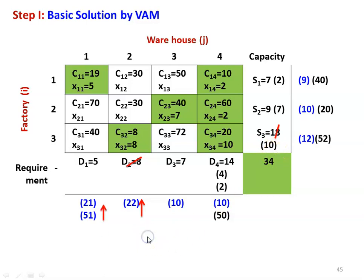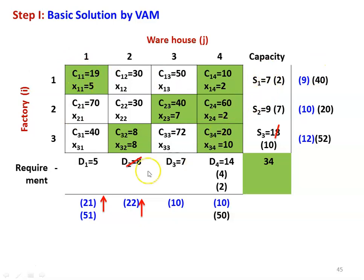The next highest difference value is 21, so column 1 enters. For column 1, the demand is 5. Among the three cells, the lowest cost cell is 19, where the supply capacity is 7. All the demand is satisfied here. The supply capacity is reduced to 2, so X11 is set to 5 and the demand is satisfied. Now the two columns are deleted and we recalculate the differences.